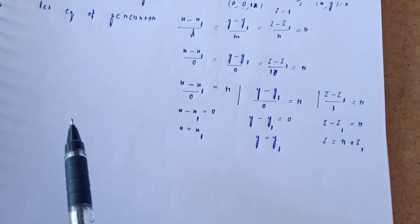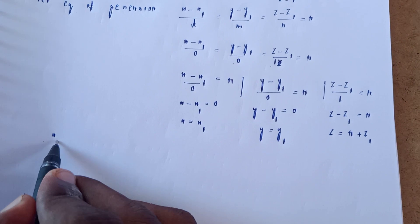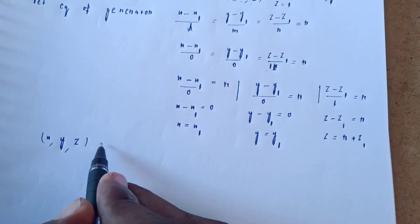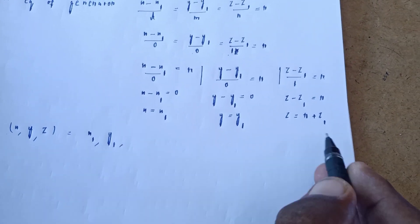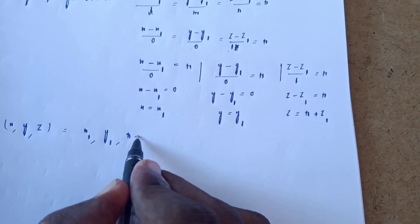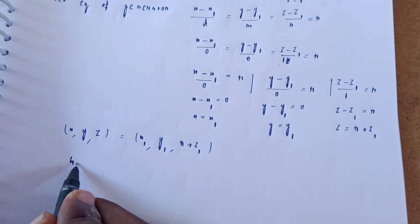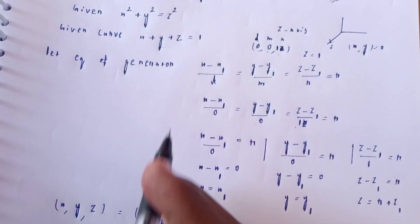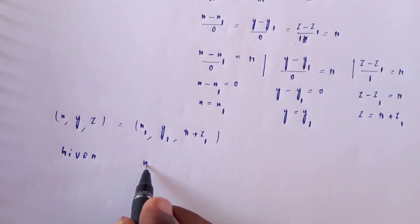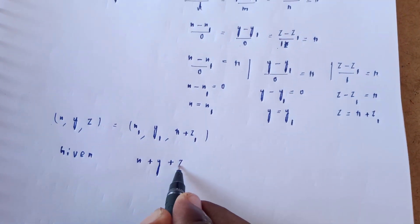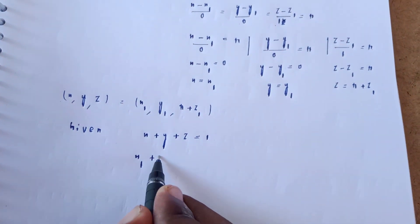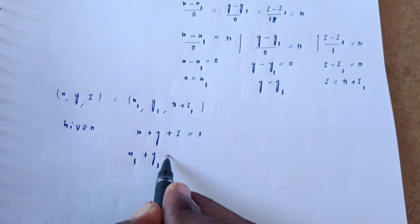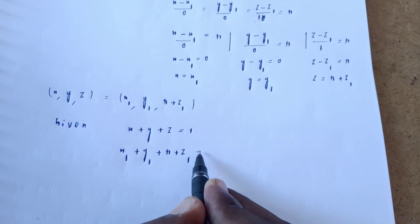Now substitute these values into the given curve equations. Replace x with x1, y with y1, and z with r + z1. Substituting into x + y + z = 1 gives: x1 + y1 + (r + z1) = 1.